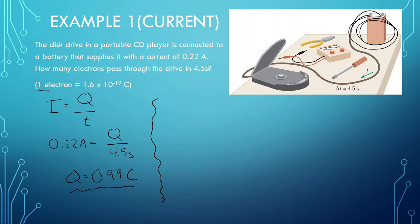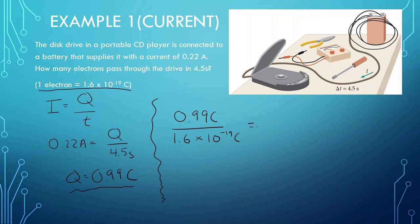We should know that one electron is equal to 1.6 times 10 to the negative 19 Coulombs. So, if that's the case, we should know that 0.99 Coulombs divided by 1.6 times 10 to the negative 19 Coulombs is going to give us how many electrons that is. Let me put that into my calculator — 0.99 divided by 1.6 times 10 to the negative 19 — and we get 6.19 times 10 to the 18th electrons.